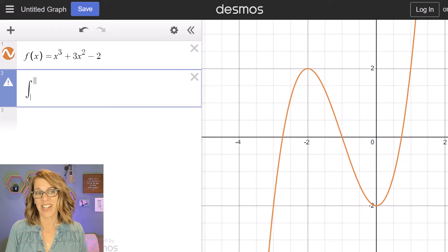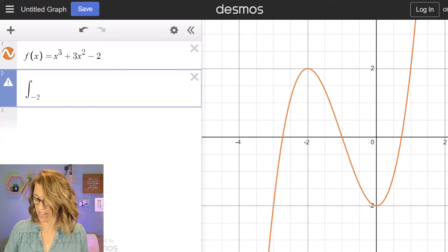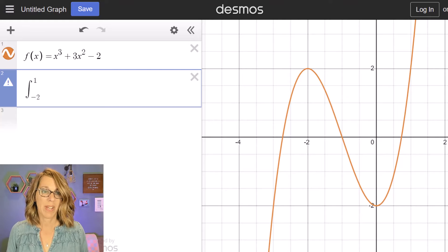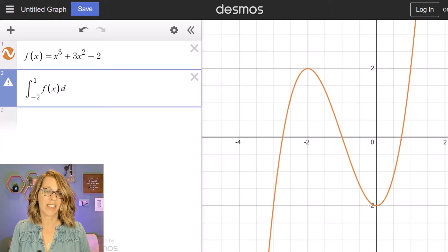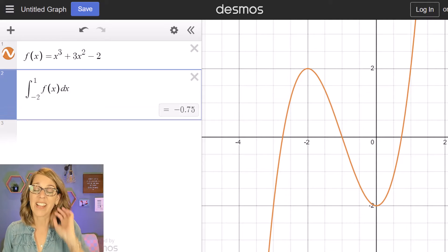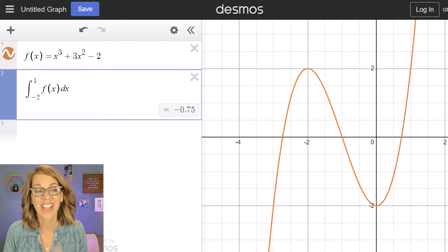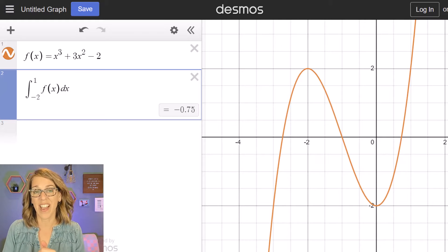So let's say that we want to find the area under this curve, the integral from negative 2. I'm going to hit my tab button and then to 1, hit my tab button again. And then I want this function here, so f of x, and I'm integrating with respect to x. I'm going to put in a dx and we get our answer there of negative 0.75.